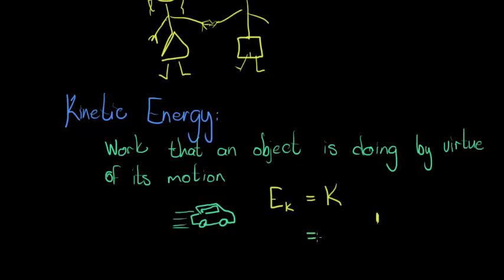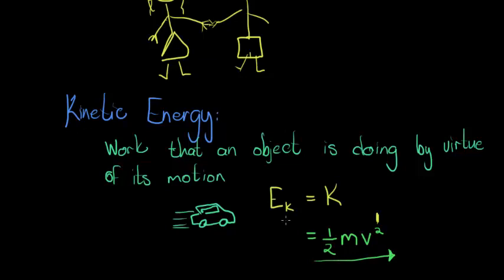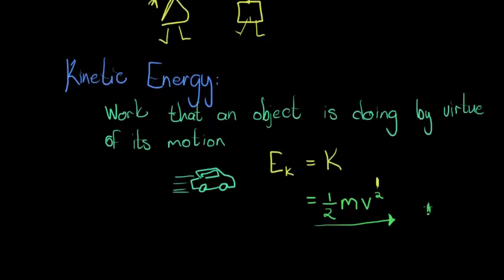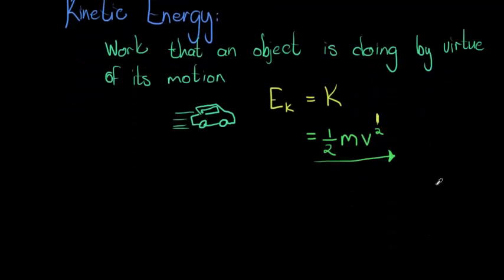How about a formula? The bigger an object is, if it's moving, more energy is needed to move it — more energy is needed to move an object with a bigger mass. So mass forms part of it. Obviously, the faster an object moves, more energy is needed. As a matter of fact, there's a quadratic relationship, and the complete formula calculates the kinetic energy that an object has and the work that it is doing by virtue of its motion.